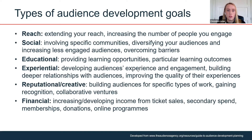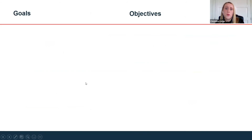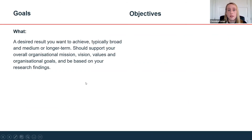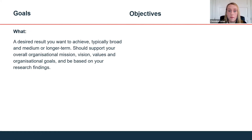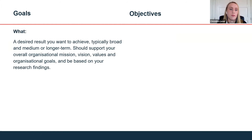When planning your audience engagement or writing an audience development plan, have those goal types in mind and think about which are relevant to you. Goals are typically a desired result you want to achieve over a slightly longer time period and might be a bit broader. Everything you do should support your organisation's business plan, forward plan, mission, and vision, and be based on research findings.